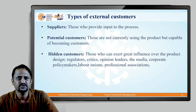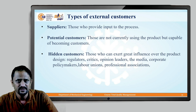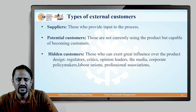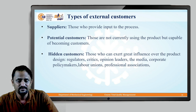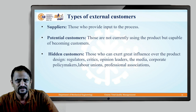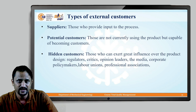The next external customer type is potential customers — those who are presently not using the product but are capable of becoming customers. For example, there is a builder who has purchased some land. Presently they do not have scope for building organizations or houses, but in the future, when the facility gets developed, they will be in a position to build a complex or society. So at present, this builder is not a customer, but he or she will be a potential customer for a building supply company in the future.